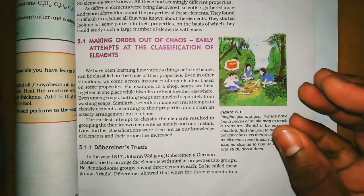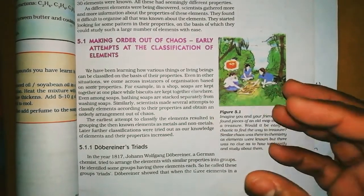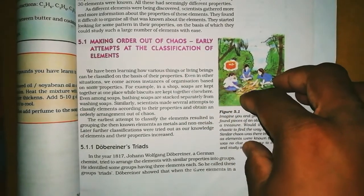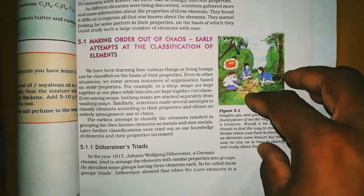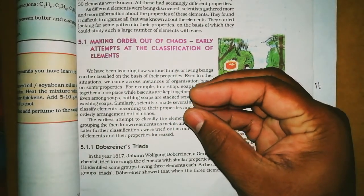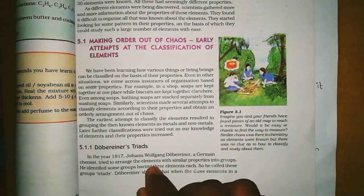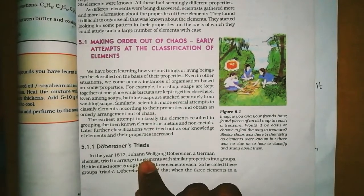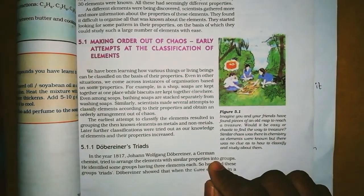He took a few elements as a small group. For example, three elements can make a group, five elements can make a group, eight elements can make a group. So he took groups of elements. At the time of Dobereiner's Triads, there were 33 elements known, and the elements he grouped included lithium, sodium, potassium; phosphorus, arsenic; calcium, strontium, barium; and chlorine, bromine, iodine.